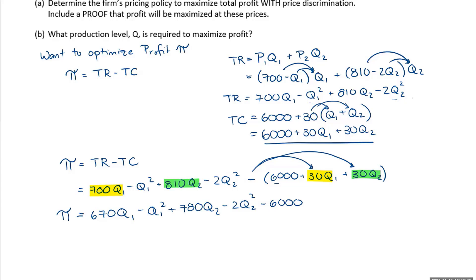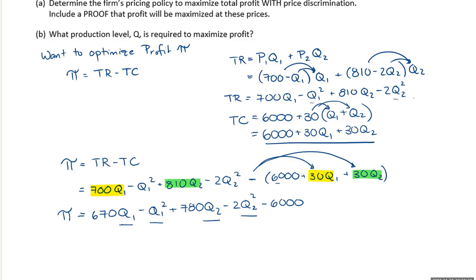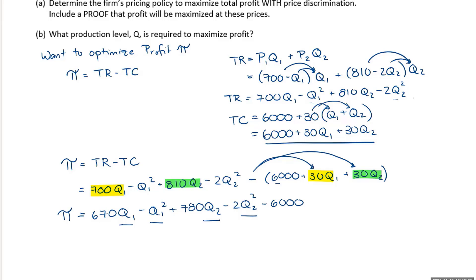Now I have profit as a function of two variables, Q1 and Q2. Are Q1 and Q2 constrained? Is there a limit to Q1 and Q2? No — there's no limit we know of. The natural constraint would come from demand, but technically there's no explicit limit on Q1 and Q2 right now. So this is unconstrained optimization.